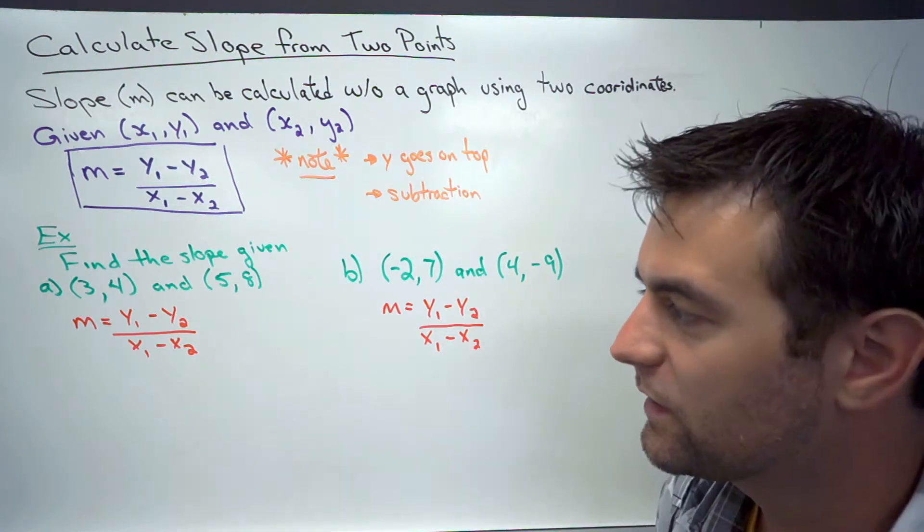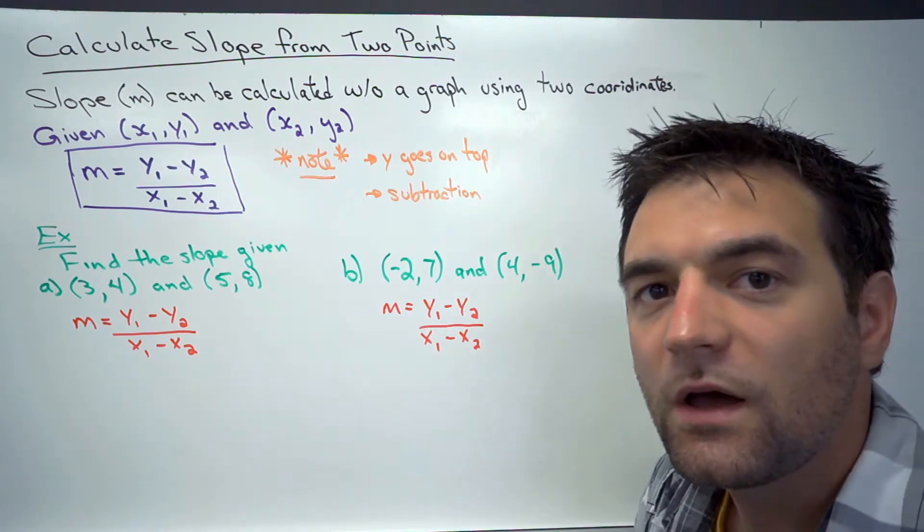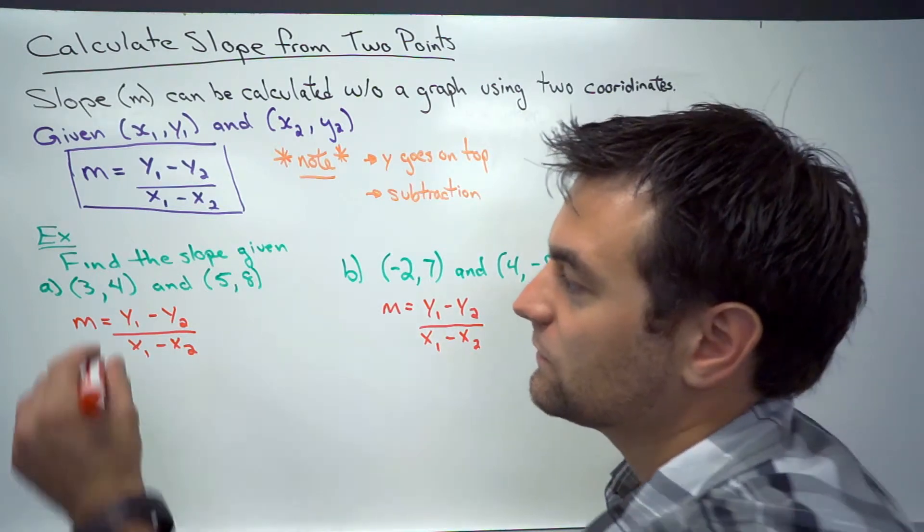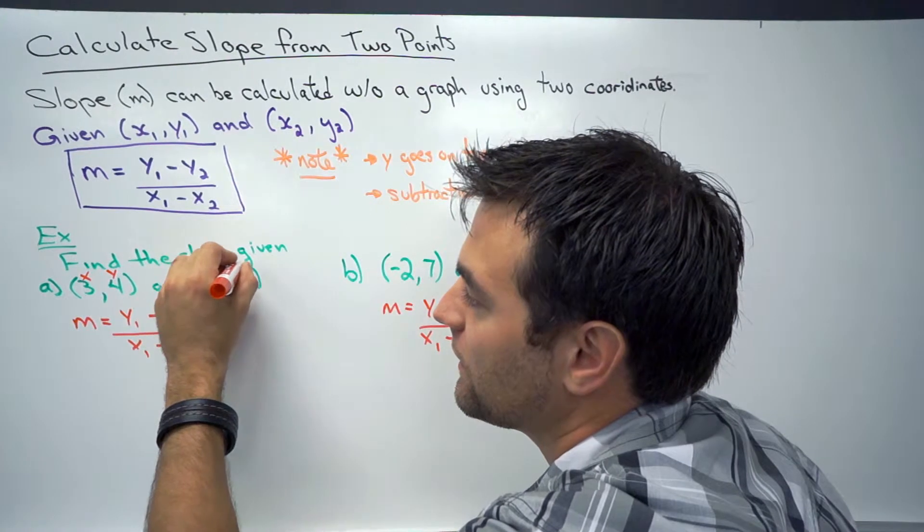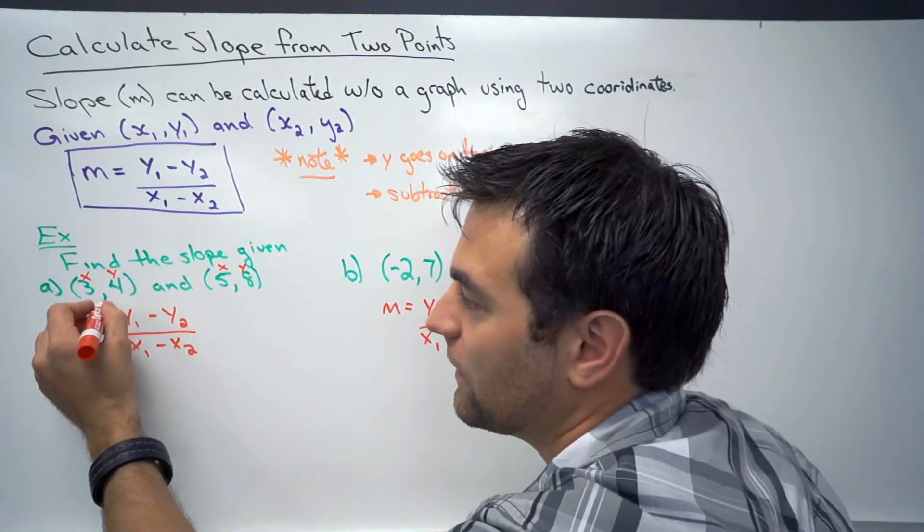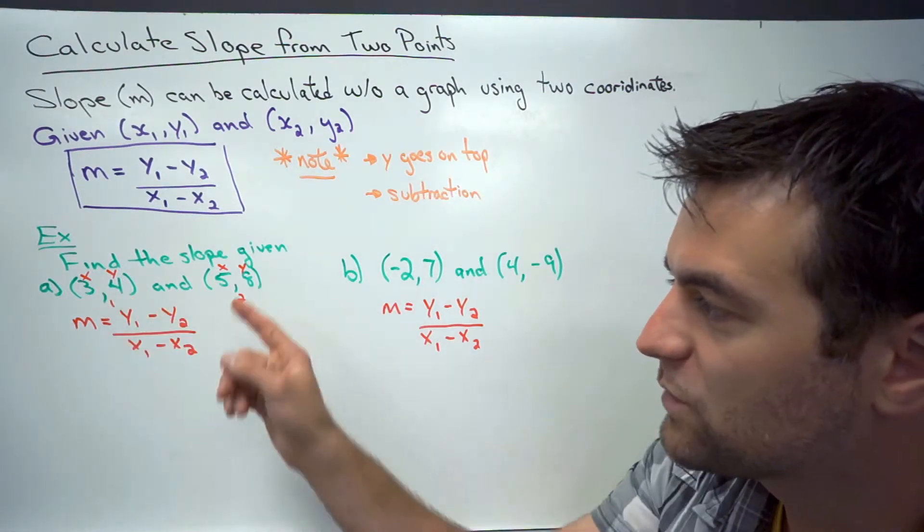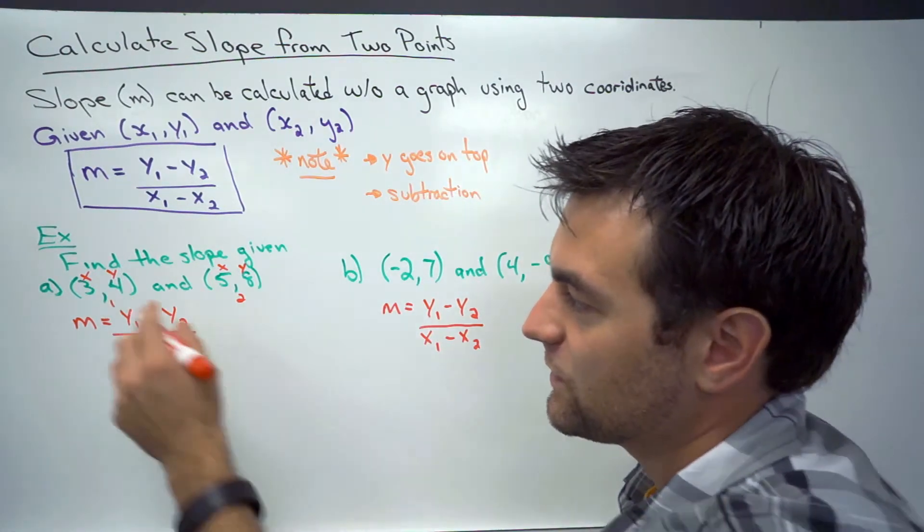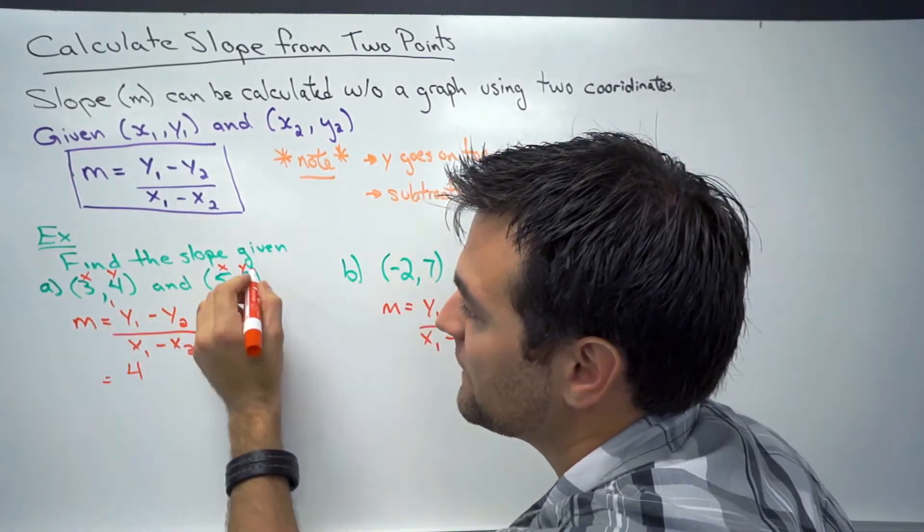So here's our formula, y1 minus y2 over x1 minus x2. How I like to remember my points, I'll often put an x, y, x, y and a 1, 2. That way I know which is which when I fill in my formula.